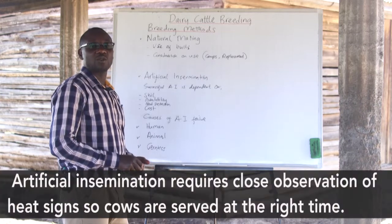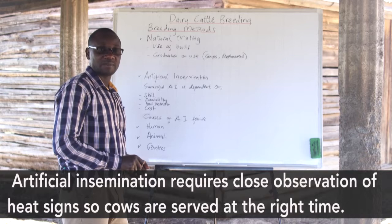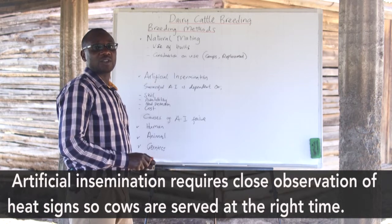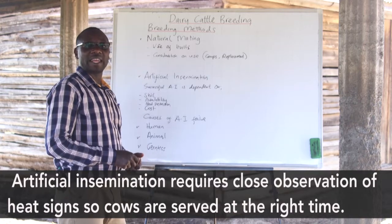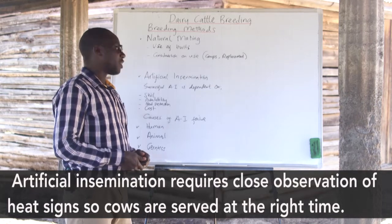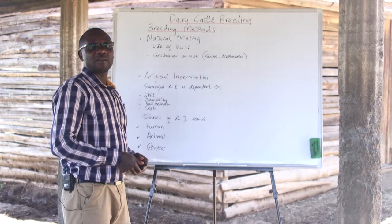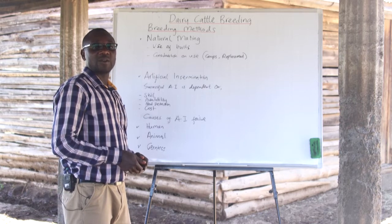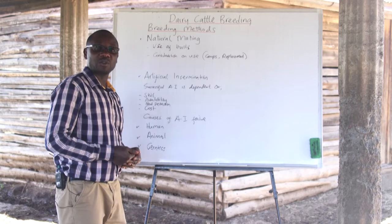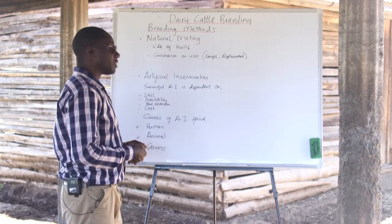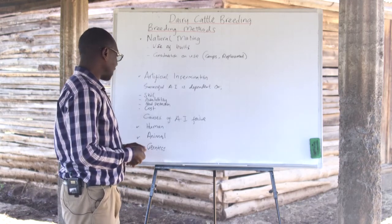Farmers also need to be good at detecting heat in dairy cows. For the process to be effective, farmers ought to inform the AI practitioner within the right time and have animals served within the right period. It can be costly for a farmer if they buy superior genetics but the animals are not in a position to conceive from the genetics served to them.